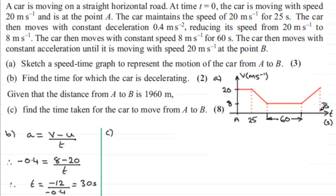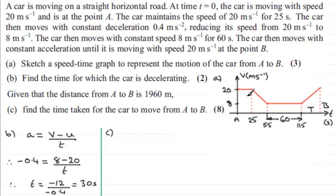For the last shape, we don't know the width of that interval, so I'm going to call it T. Since the deceleration phase was 30 seconds, this time marker is at 25 plus 30 equals 55 seconds. Adding the 60-second constant speed phase gives us 115 seconds. We need to find T and add it to 115, knowing the total area under the graph equals 1960.